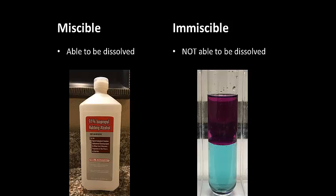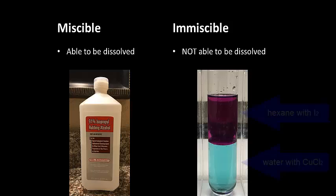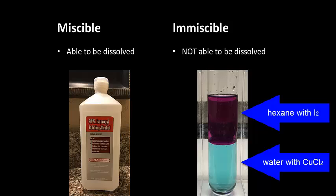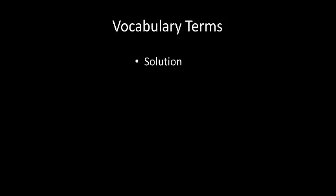Immiscible liquids will not dissolve in each other to any great extent, but will form layers based on the densities of the liquids. An example of this is hexane and water. Hexane has the lower density, so will float on top of the water, which has the higher density. Here is a list of the vocabulary words you should now be familiar with.